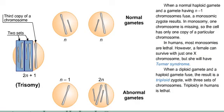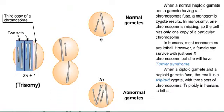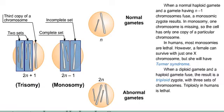When a normal haploid gamete and a gamete having N minus 1 chromosomes fuse, a monosomic zygote results. In monosomy, one chromosome is missing, so the cell has only one copy of a particular chromosome. In humans, most monosomies are lethal. However, a female can survive with just one X chromosome, but she will have Turner syndrome.